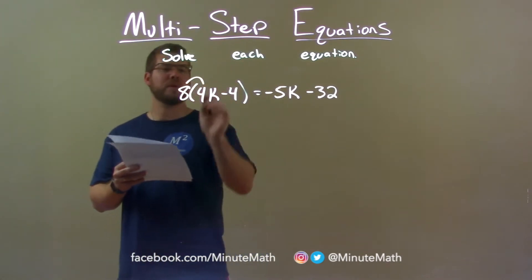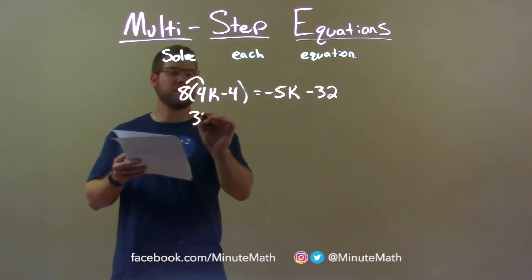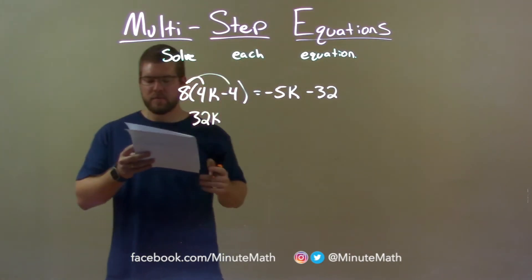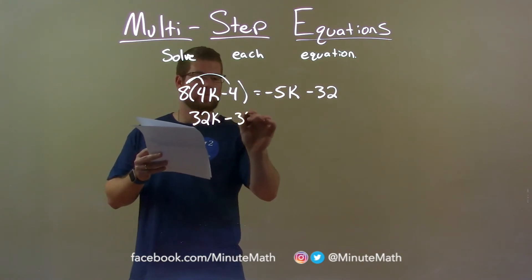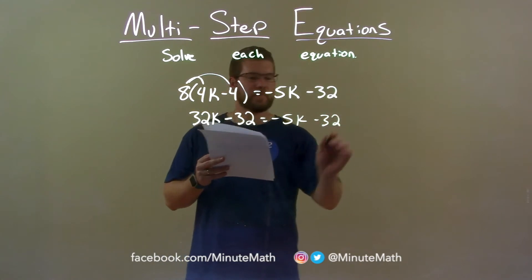My first step in doing that is distributing the 8 in the parentheses. 8 times 4k is 32k, and 8 times minus 4 is negative 32. And then we have negative 5k minus 32 on the right.